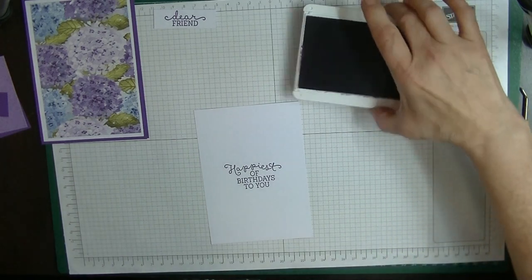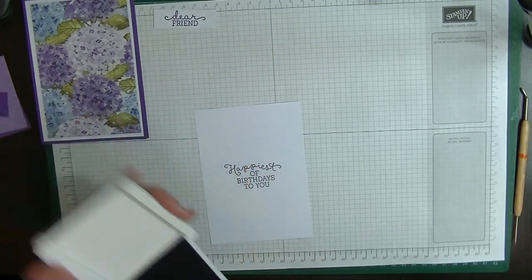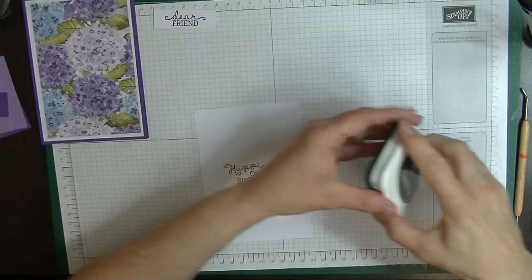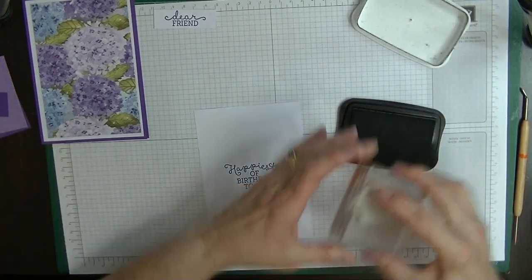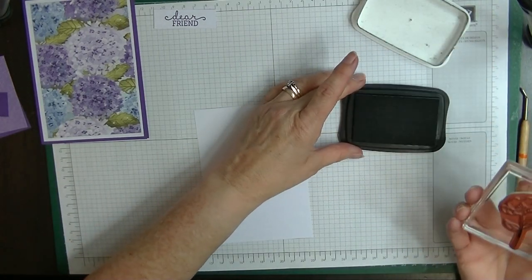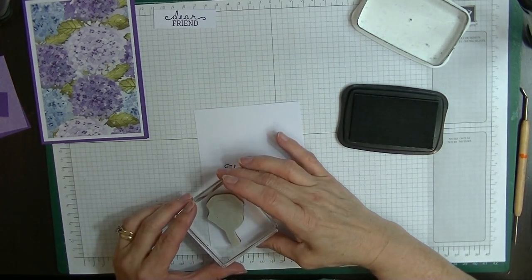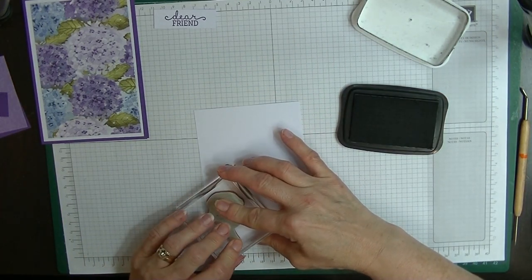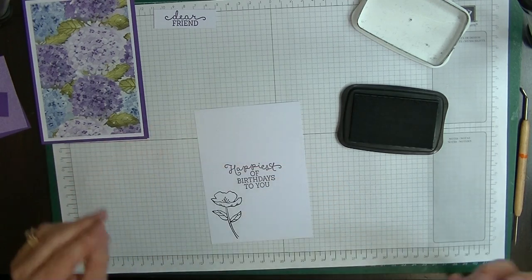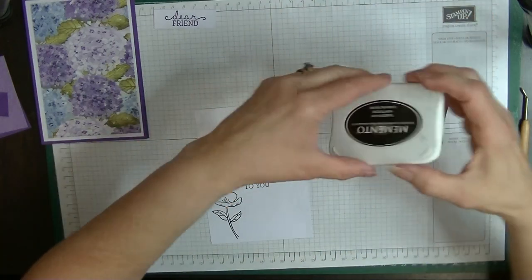In the memento, I'm going to just stamp my flower down in this bottom corner like so.